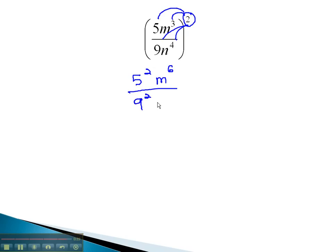9 squared. And on the n's, we multiply the double exponent to get n to the 8th. Simply evaluating the 5 squared and the 9 squared gives us our final answer of 25m to the 6th over 81n to the 8th.